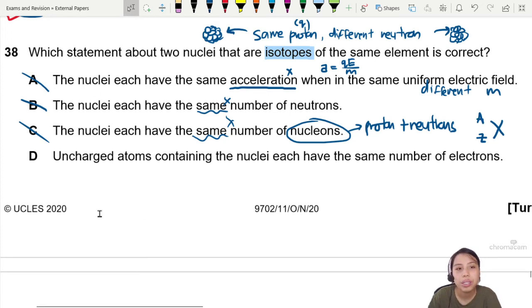In total, proton and neutron. Okay, last one, D. I guess this has to be the best choice already. So, D, the uncharged atoms containing the nuclei have same number of electrons.